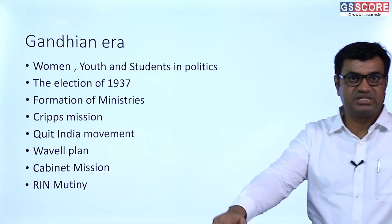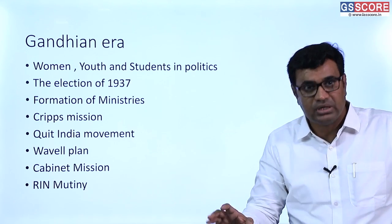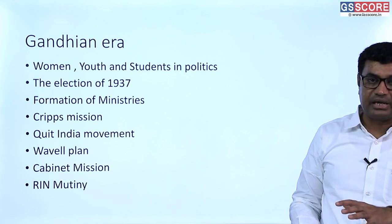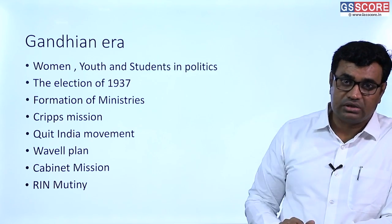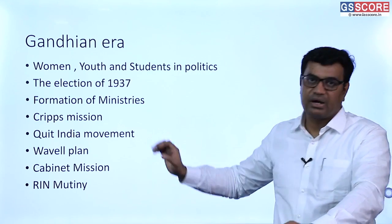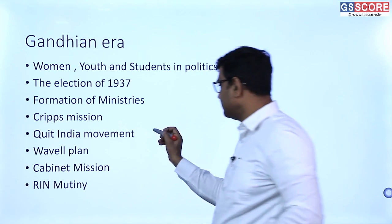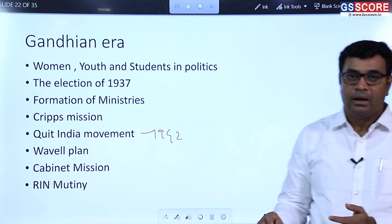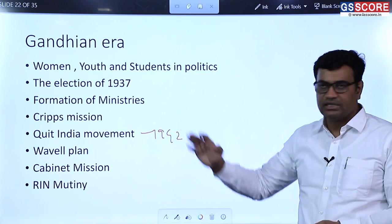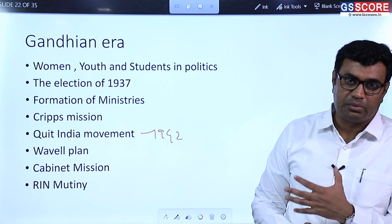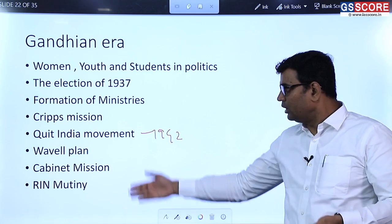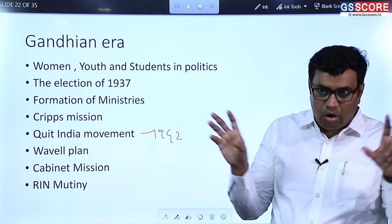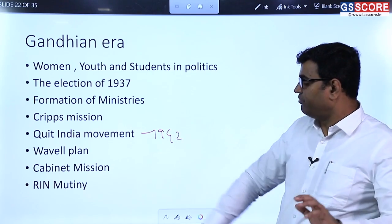With World War II in 1939, British wanted Indian support and dispatched the Cripps Mission in 1940, which was unsuccessful. As Japan attacked India from the northeastern side, Gandhi became impatient and launched the Quit India Movement in 1942. Before the movement could start, British arrested all major national leaders. Masses became leaderless and the movement turned violent and spontaneous. After World War II, Lord Wavell gave the Wavell Plan to ensure collaboration between the Muslim League and Congress.